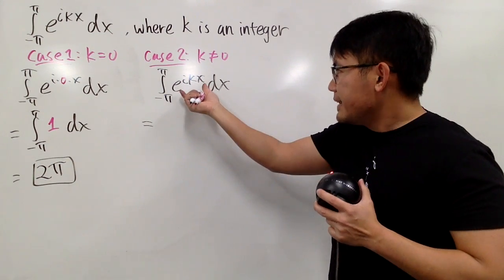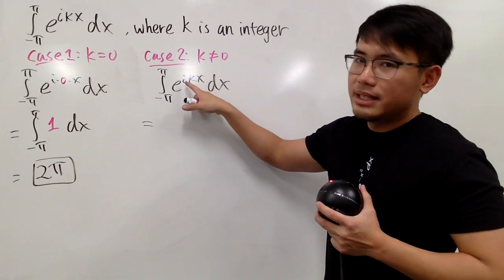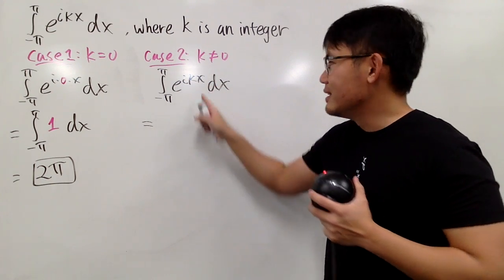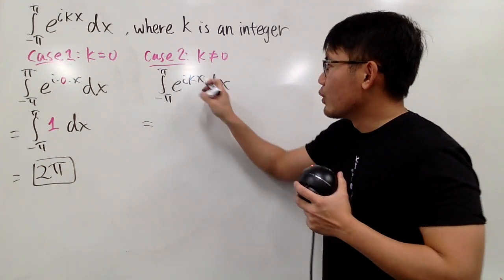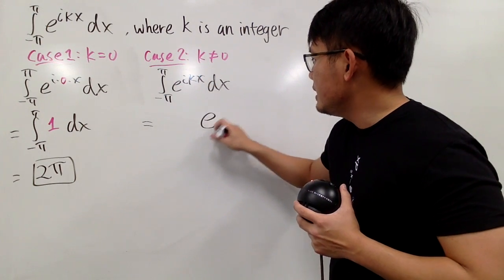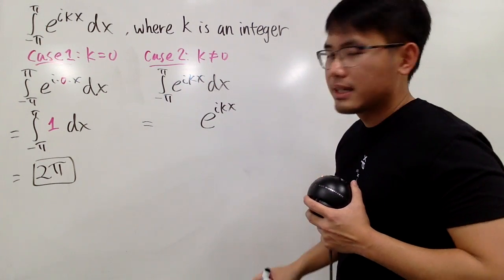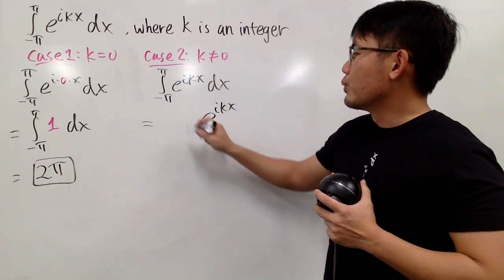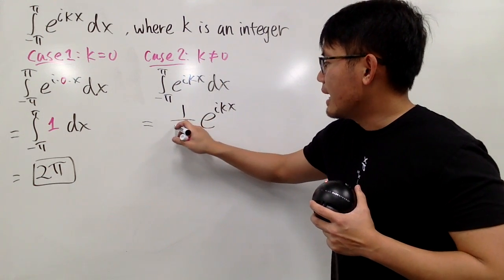Well, to find an antiderivative for this, notice the derivative of ikx is just i times k. This is like a constant multiple. So first you repeat this, which is e to the ikx. And then you divide it by this derivative, which is going to be divided by ik.